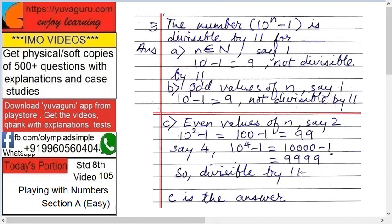We want even only, 10 raised to 4. So 10 raised to 4 is 10,000, minus 1 equals 9,999. Is it divisible by 11? Yes! So the answer is C, meaning the number should be even values of n.